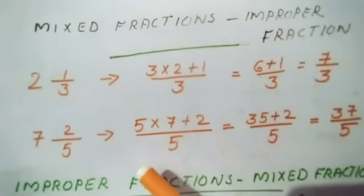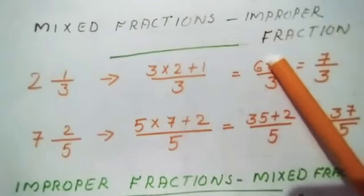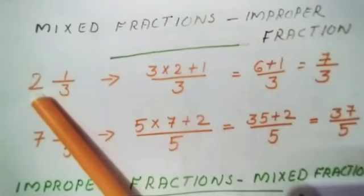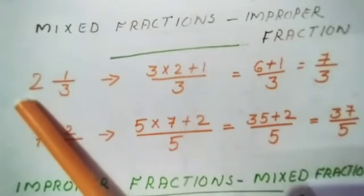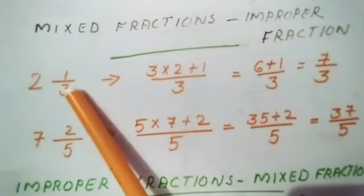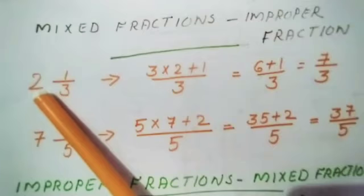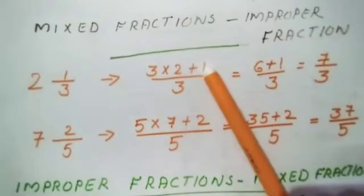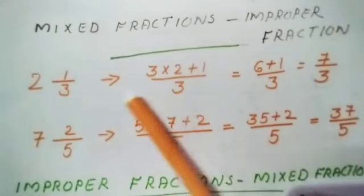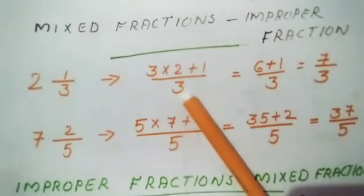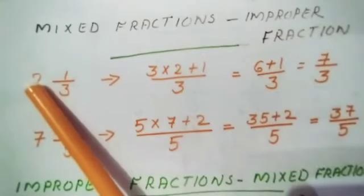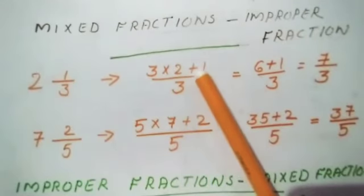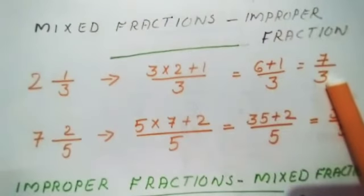Next is how to change a mixed fraction into an improper fraction. For example, 2 and 1/3: here 2 is the whole part, 1 is the numerator, and 3 is the denominator. Multiply the denominator by the whole number, then add the numerator. That is 3 × 2 + 1 = 7. So the new numerator is 7, and the denominator stays the same — giving 7/3.